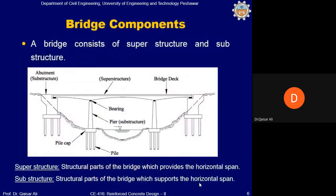A typical bridge has two major components: superstructure and substructure. Substructure parts are those which support the horizontal span — it is not necessarily the part below the ground. The horizontal span, including the deck slab and girders, forms the superstructure. All structural members below the superstructure are called substructure, which includes bearings, piers, pile cap, piles, and also abutments.